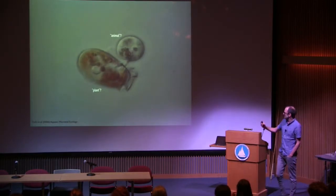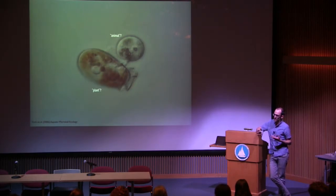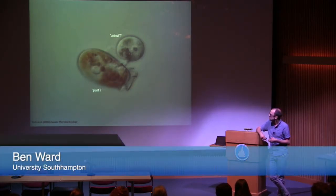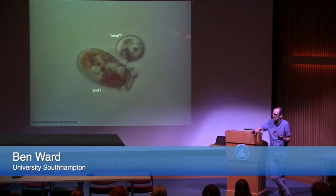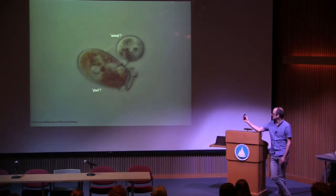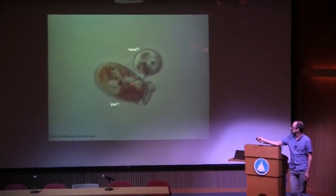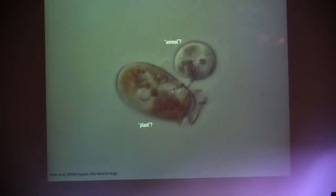This is a video of two organisms that sort of frame our view of marine ecosystems based on our view of the terrestrial ecosystem. We think of this dichotomy between plants and animals, and that's how we model marine ecosystems traditionally. Here we've got this large pigmented organism, a dinoflagellate, packed full of photosynthetic pigments, so looking at it, you might put it in that plant box.